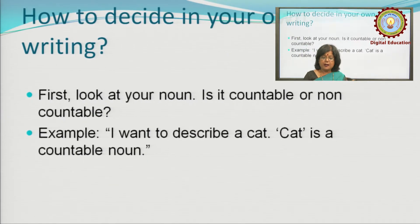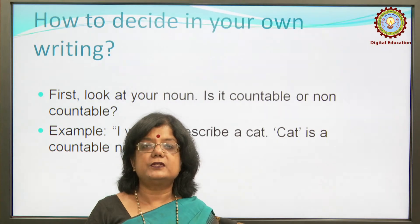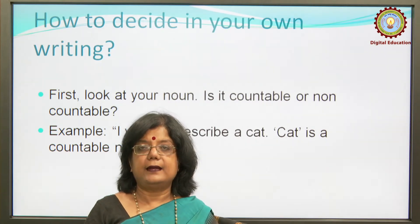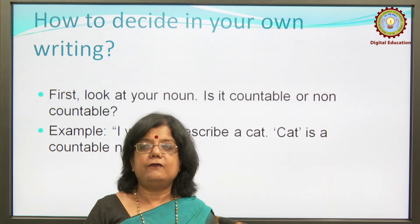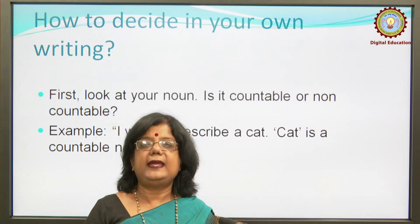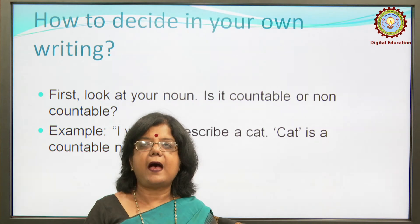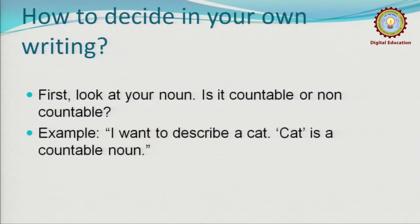Besides this, we should have a very clear concept about the usage of 'a' and 'an.' 'An' is used when we have a noun starting with a vowel — a, e, i, o, u — for example: 'An apple a day keeps the doctor away,' 'an honest man,' etc.